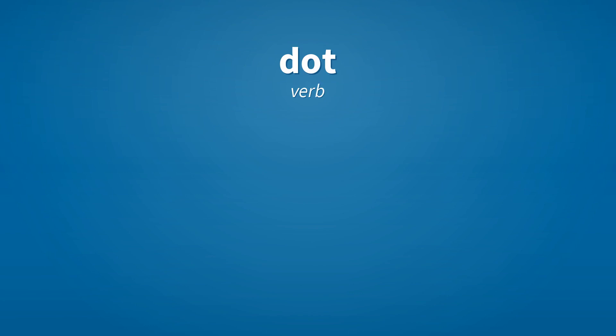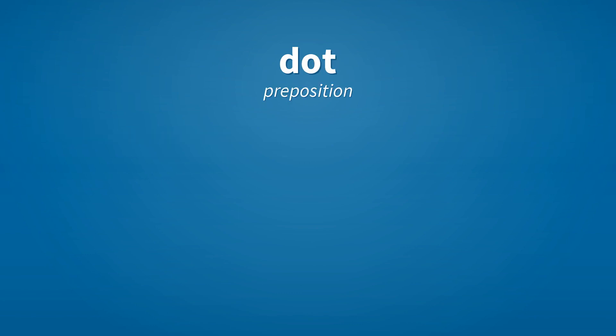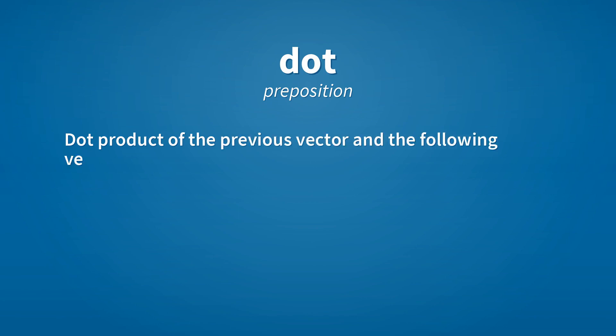Verb. To punch. Preposition. Product of the previous vector and the following vector. The work is equal to F dot delta x.